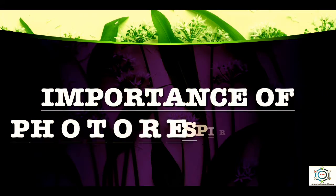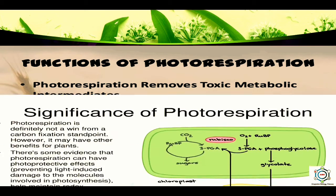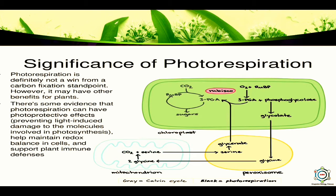What are the importance and functions of photorespiration? Photorespiration removes toxic metabolic intermediates, protects from photoinhibition, and supports plant defense reactions. Photorespiration is intimately integrated into primary metabolism. It may have photoprotective effects, help maintain redox balance in cells, and support the plant's immune defense.